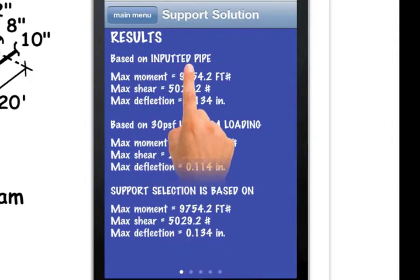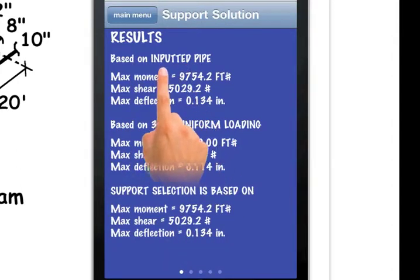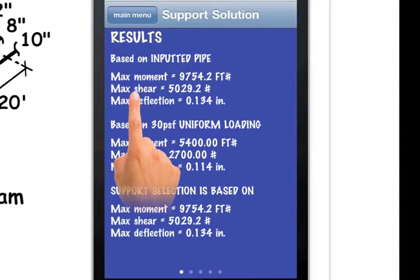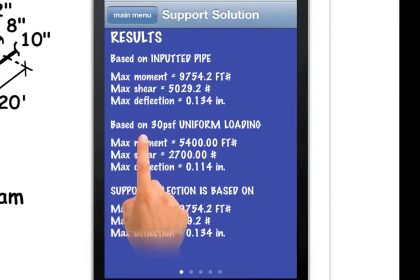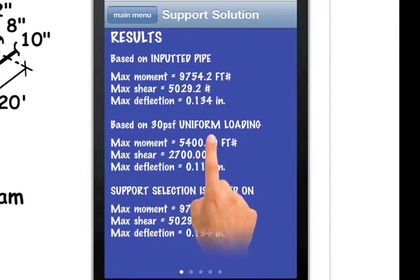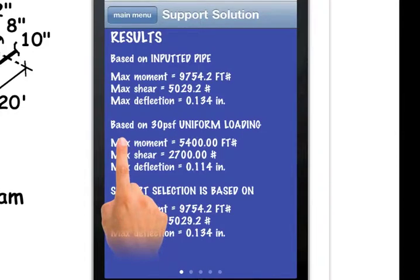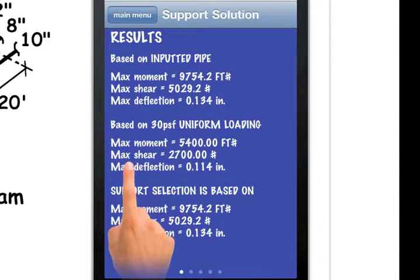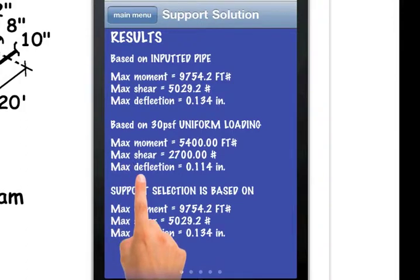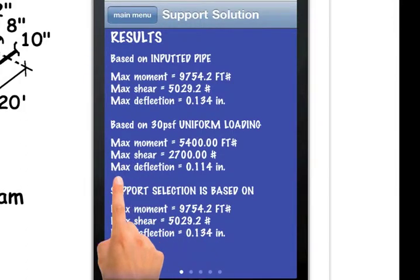The uniform loading is 30 pounds per square foot which is similar to loading up the support with 4 inch pipes spaced approximately at 6 inch centers. The calculator computes both. So you can feel assured that the support will be sized correctly for any pipe which is not presently on a support. We all know that empty space on a support will eventually be filled.